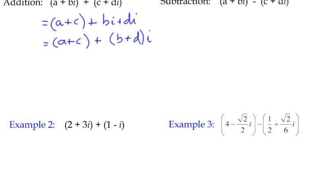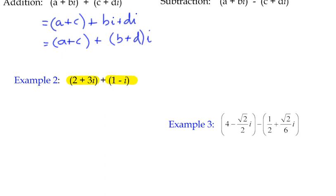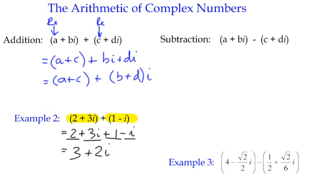And if you look down here, as our example, two plus three i plus one minus i. Basically, we don't even need to write them with brackets in. And we can say that two plus one is three. Positive three i minus one i is positive two i. So the answer there is three plus two i. So it's quite straightforward to add complex numbers in this form.